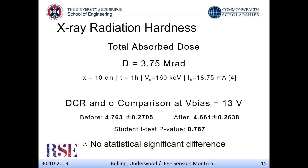We did a radiation hardness test to assess whether the SPAD was being damaged. We irradiated it at 160 kV at 18.75 milliamperes for a total of one hour at a distance of 10 centimeters, and the total absorbed dose equals 3.75 megarads, which is quite significant. We did a dark count comparison and standard deviation before and after irradiation, followed by a Student's t-test, and found a p-value of 0.787 — meaning the results are not statistically significantly different, so the SPAD is still operating exactly the same before and after irradiation.